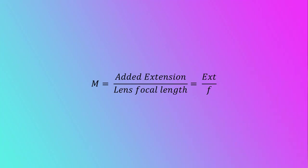Another way to calculate magnification when focusing on a close subject is to compare the added extension to the focal length of a lens. The equation is magnification M equals additional extension divided by lens focal length.